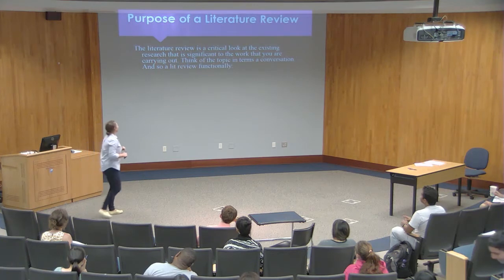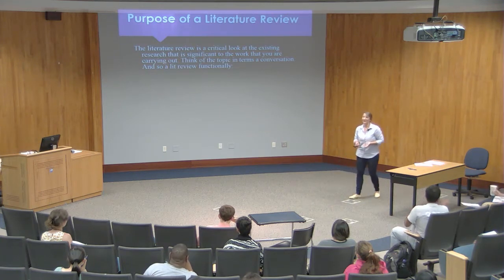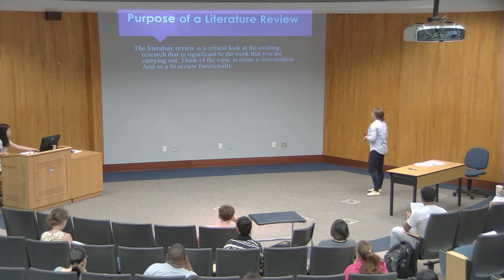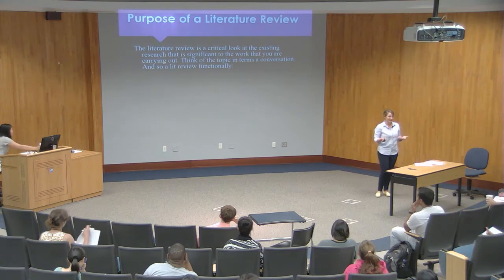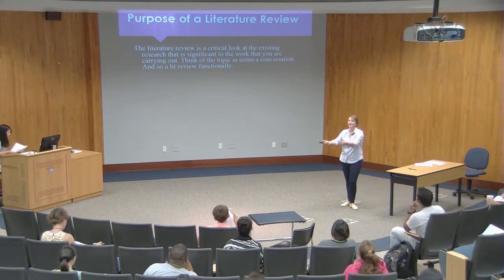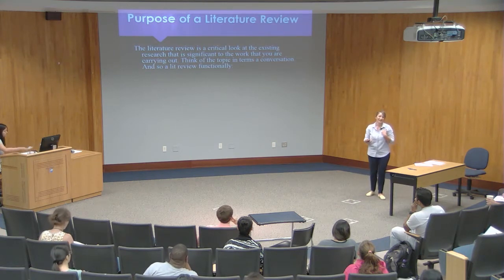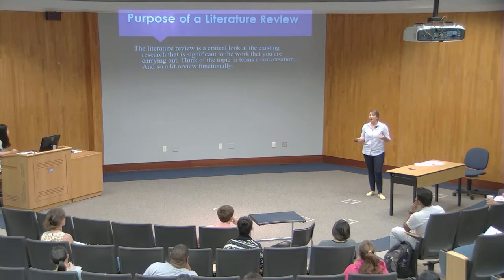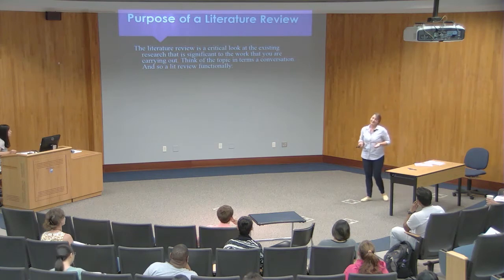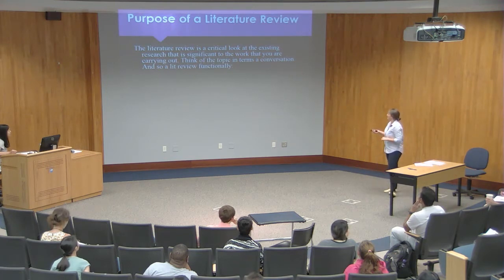The purpose of a literature review is to look at the important existing information on your very specific, focused topic. The key word is: existing research that is significant and related to your topic. You want to be able to tell what matters and what doesn't matter. It's not exhaustive — when I was first writing my first literature review, I thought you had to write about every single thing even slightly related to your topic. That will make your life miserable and won't make for a good literature review. Focus on the significant work that is relevant to what you're talking about.